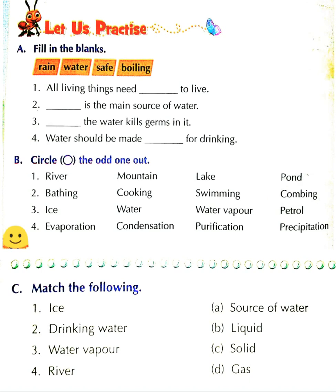Third is: ice, water, water vapor, and petrol. Ice, water, and water vapor are all forms of water — ice is the solid form, water is the liquid form, and water vapor is the gaseous form. While petrol is completely different. So petrol you have to circle out.